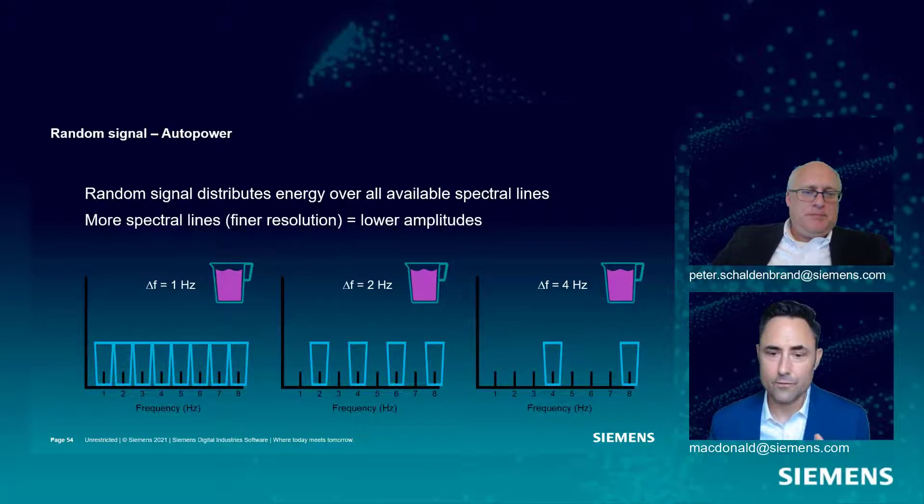So the more frequency lines or the finer resolution, you will get a lower amplitude. I've got an eight hertz random signal in all of these cases. And I've got a delta F of one hertz, delta F of two hertz, and a delta F of four hertz.